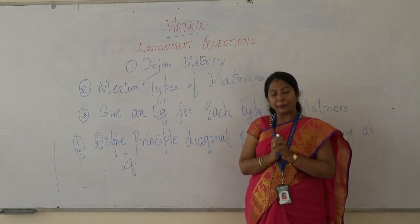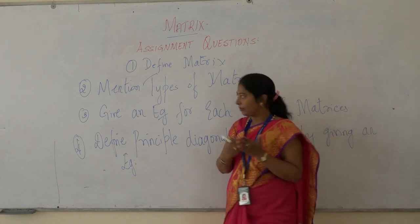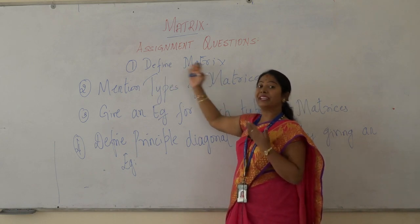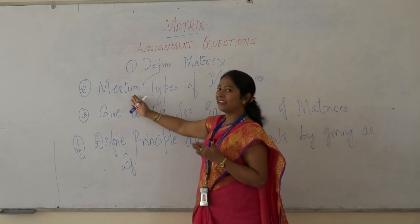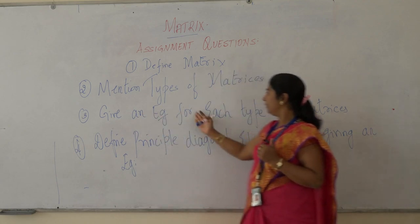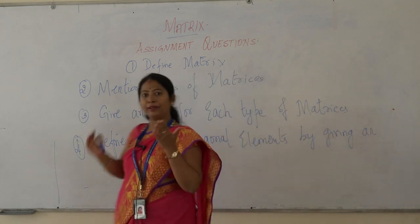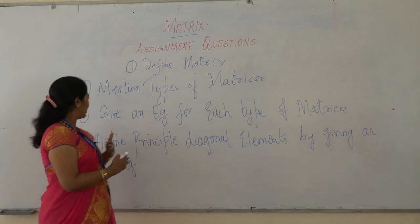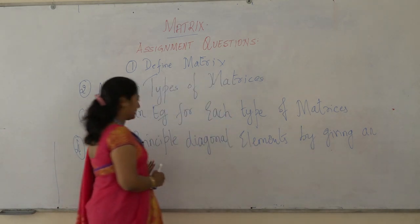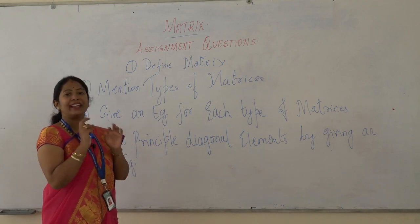We shall now go to the assignment part for better understanding. The first question: define matrix. The second question: mention the different types of matrices. The third question: give an example for each type of matrices. The fourth question: define principal diagonal elements by giving an example — define one matrix and identify its principal diagonal elements.